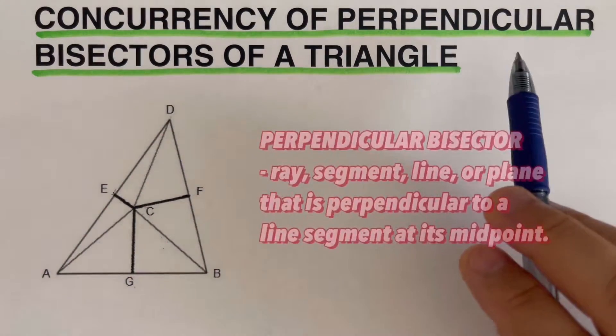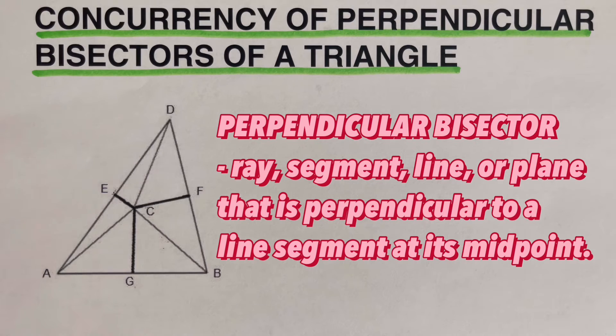While perpendicular bisector is defined as the ray, segment, line, or plane that is perpendicular to a line segment at its midpoint.